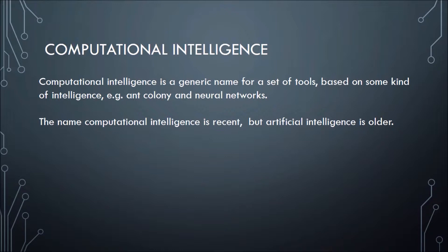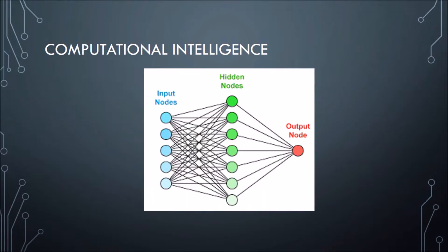Computational intelligence is a generic set of tools, such as artificial neural networks and others. They are all based on the same idea that you have some kind of intelligence used to solve problems. The name computational intelligence is relatively recent, but artificial intelligence — which some people say is the same thing — is much older. One example is the well-known artificial neural network, which is basically a graph, a set of neurons that are mathematical models and can be used for solving generic problems. This is a classical perceptron with inputs, hidden layers, and outputs.